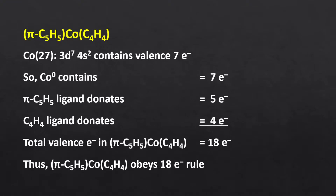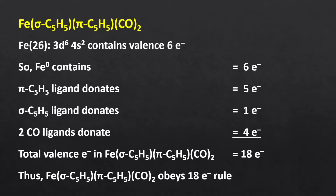In another complex, the oxidation state of cobalt is 0. So 7 electrons from cobalt, 4 from cyclobutadiene, and 5 from cyclopentadienyl — overall 18 electrons. It also follows the 18 electron rule and is stable. In this complex we have both 1 and 5 electron donor cyclopentadienyl, and the oxidation state of iron is 0. So 6 electrons from iron, 4 from 2 carbonyls, 1 from sigma cyclopentadienyl, 1 from another sigma cyclopentadienyl, and 5 from pi cyclopentadienyl — overall 18 electrons, making this complex stable.